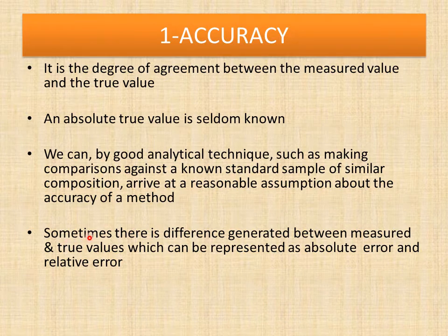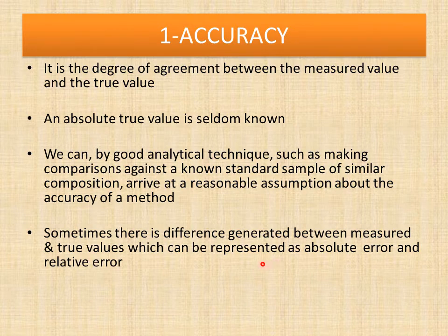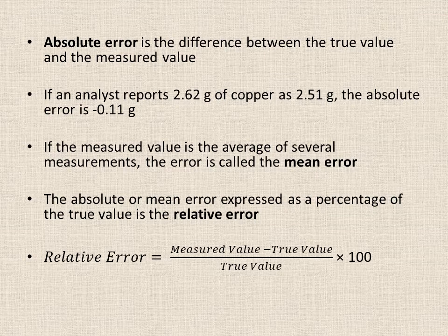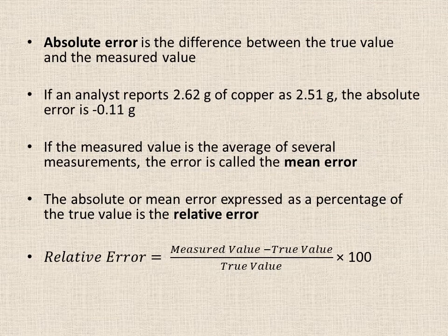Sometimes there is a difference generated between the measured value and the true value, and it can be represented as absolute error and relative error. The absolute error is the difference between the true value and the measured value. For example, if an analyst reports 2.62 grams of copper as 2.51 grams, then 2.62 is the true value and 2.51 is the measured value. So the absolute error equals measured value minus true value, which gives minus 0.11 grams.